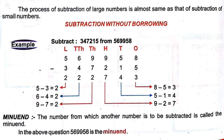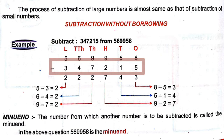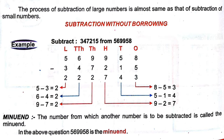First, before subtraction, you know that the number from which another number is to be subtracted is called the Minuend. The Minuend here is 5,66,958, because we are subtracting 3,47,215 from 5,66,958. So this is the Minuend.